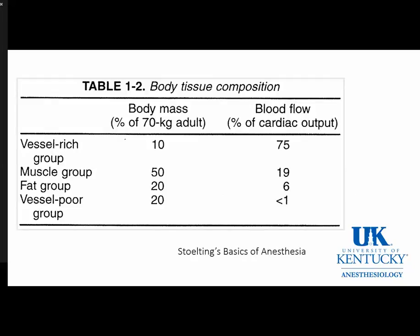Another table from Stolting's Basics of Anesthesia shows that drugs given in anesthesia have their early distribution to organs receiving 75% of cardiac output: the liver, kidney, brain, lungs, and heart. After minutes to hours, drugs redistribute to muscle groups, and then after days in some instances, to fat and then vessel-poor groups such as bone, which receives less than 1% of cardiac output.